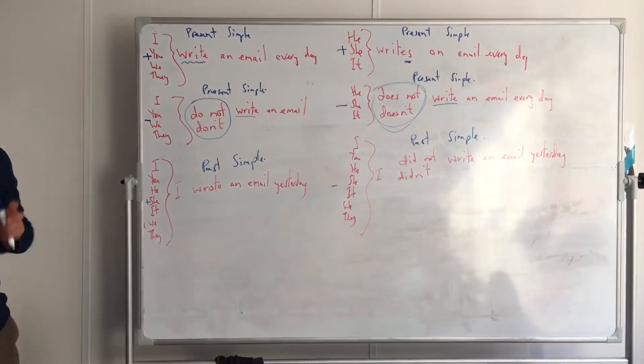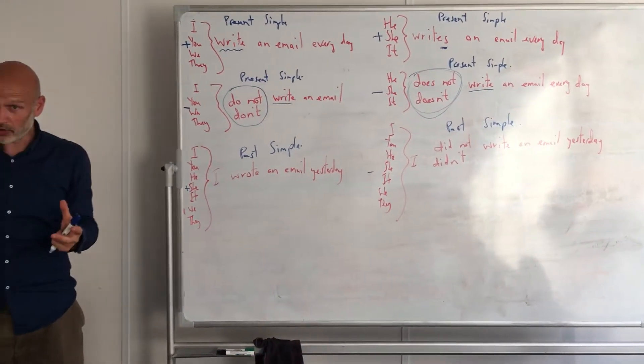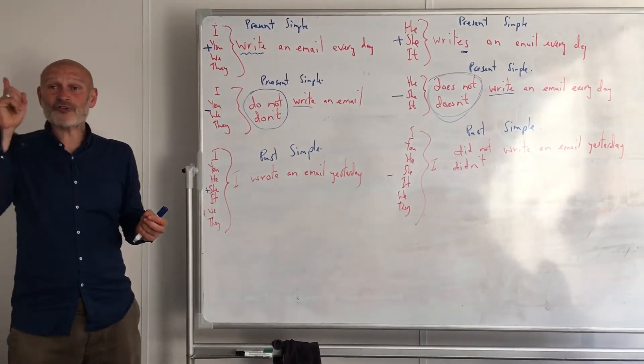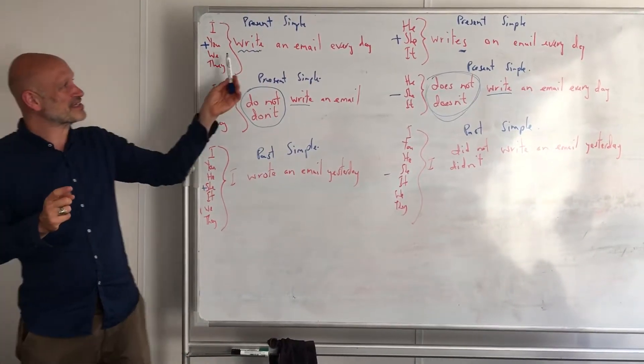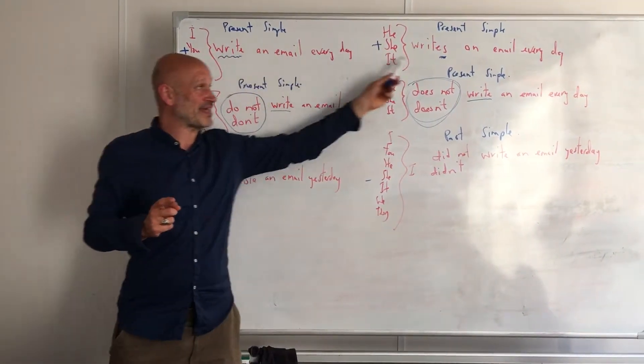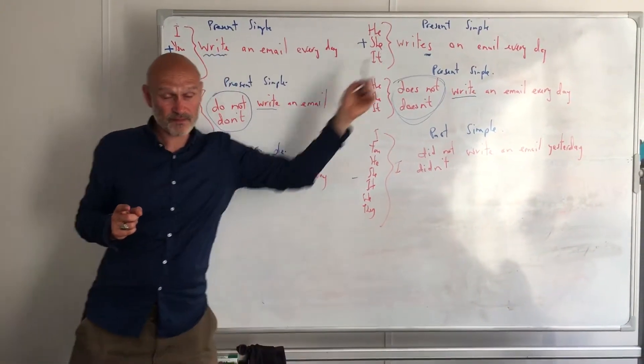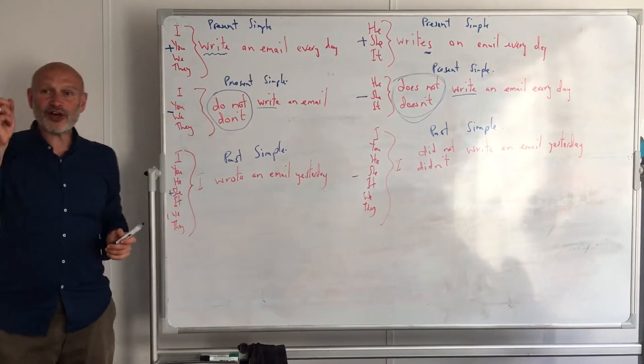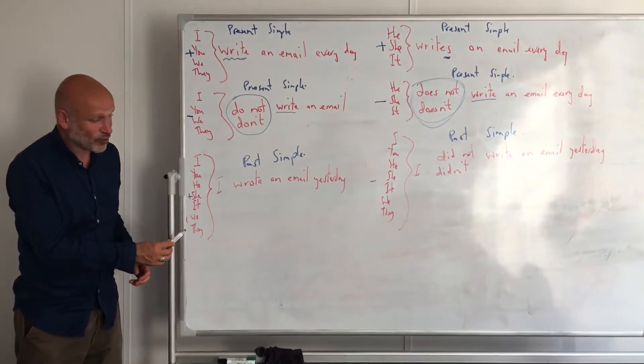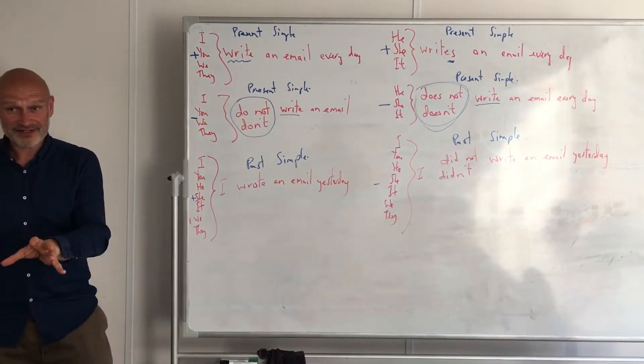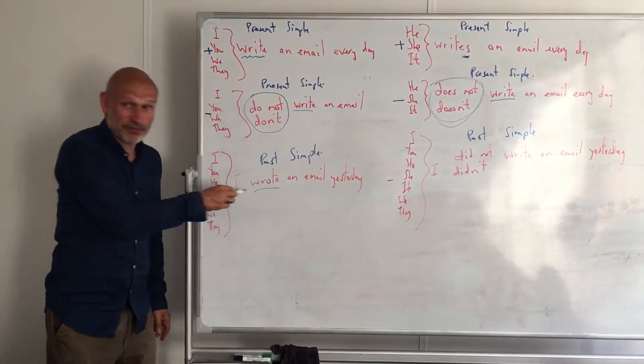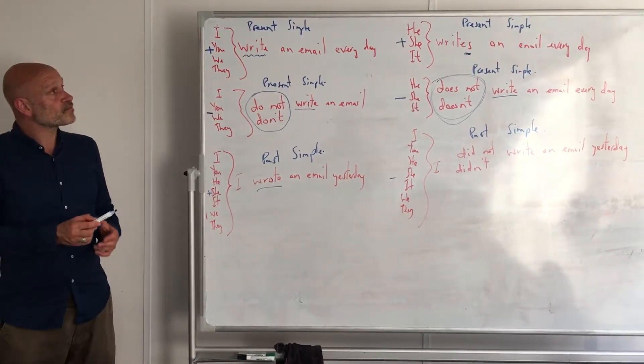Now the past is easier and more difficult. Well, it's easier because there's only one verb. You don't need to remember about positive I, you, we, they, he, she, it changes. We just have to learn one verb for I, you, he, she, it, we, or they. But the difficult thing is you have to learn the verb.